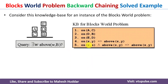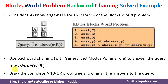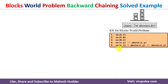Given these knowledge bases, we need to answer this query: there exists w such that above(w, b) — that is, which all blocks are present above b. We need to use the backward chaining technique, also known as the generalized modus ponens rule, and draw the complete AND/OR proof tree showing all the answers. We have been given five knowledge bases.